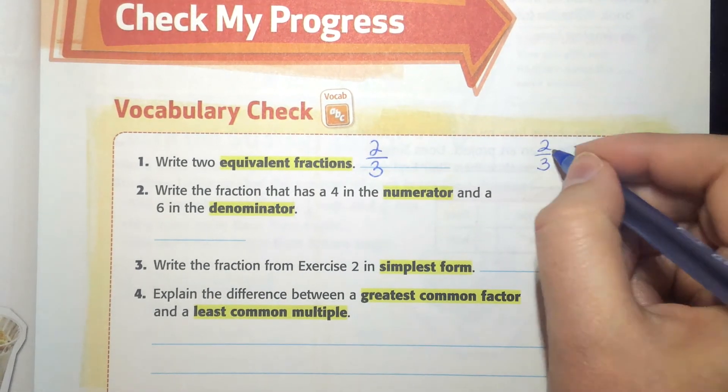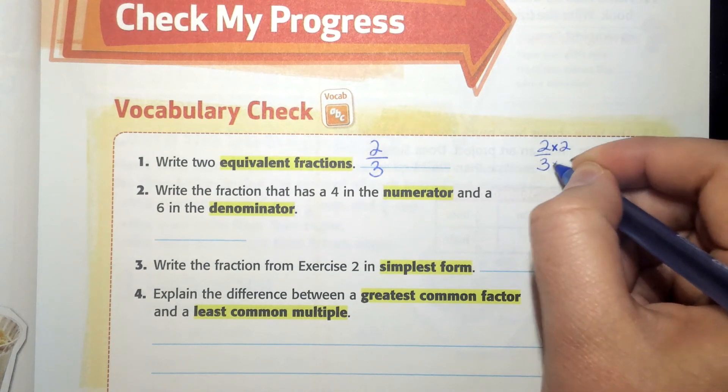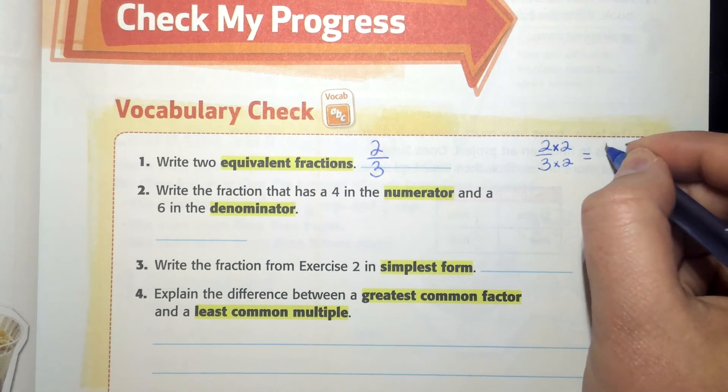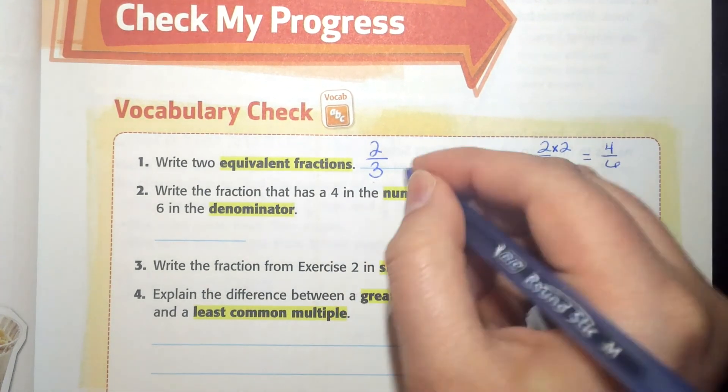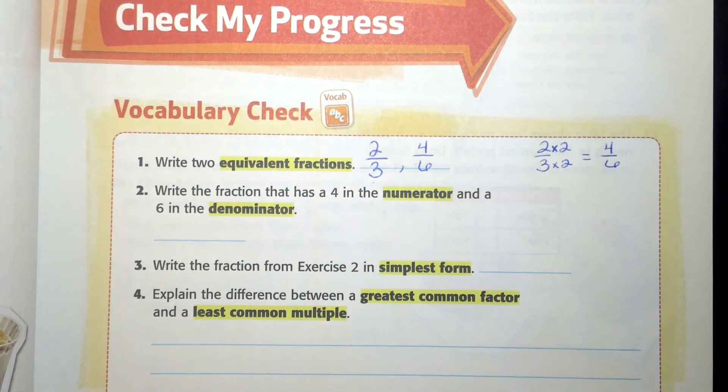So if I wanted to, I could say two-thirds and I could multiply by two to both the numerator and the denominator and get four-sixths, which means two-thirds and four-sixths are equivalent fractions.